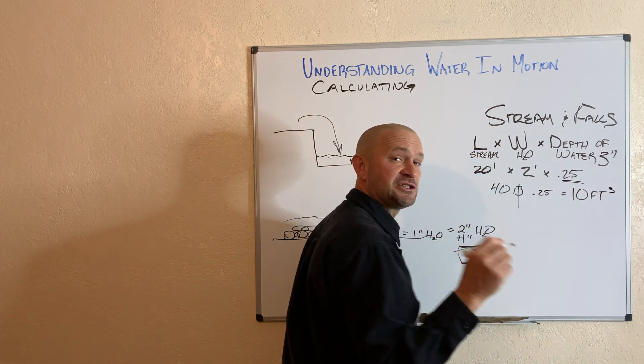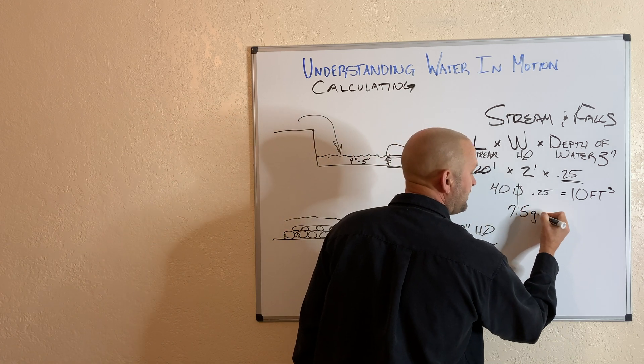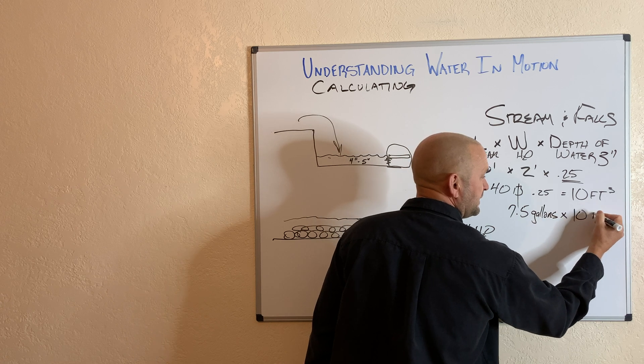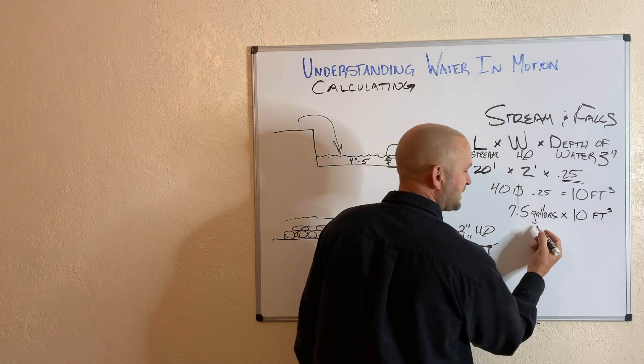A cubic foot is 7.5 gallons of water. 7.5 gallons times 10 cubic feet. Guess how many gallons that is? 75.